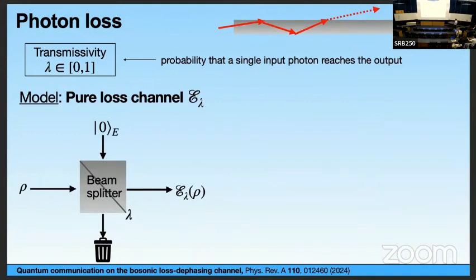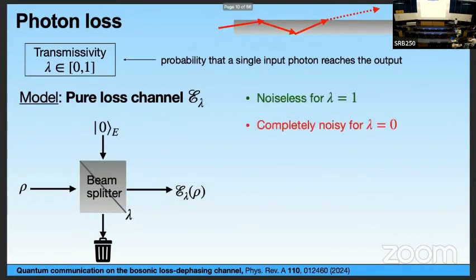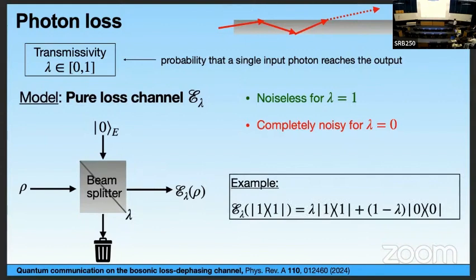A beam splitter is basically a semi-reflective mirror. The pure loss channel is noiseless for transmissivity equal to one — basically the identity channel — and completely noisy for transmissivity equal to zero. For example, if you input the single photon state, the output is, with probability lambda, the single photon state, and with probability one minus lambda, the photon is lost and you have the vacuum.